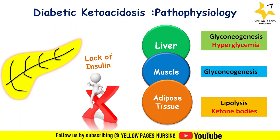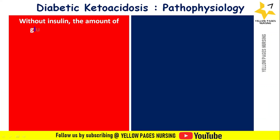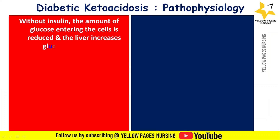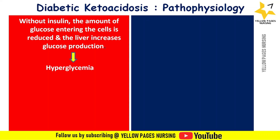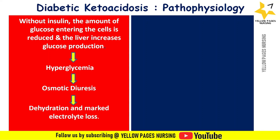Looking into the pathophysiology of diabetic ketoacidosis: without insulin, the amount of glucose entering the cells is reduced and the liver increases glucose production, leading to hyperglycemia. In an attempt to get rid of the body's excess glucose, the kidneys excrete glucose along with water and electrolytes such as sodium and potassium. This osmotic diuresis is characterized by excessive urination — that is, polyuria — which leads to dehydration and marked electrolyte loss.